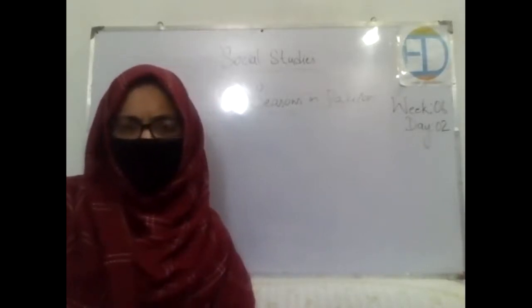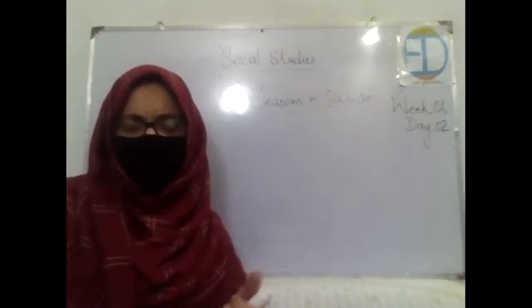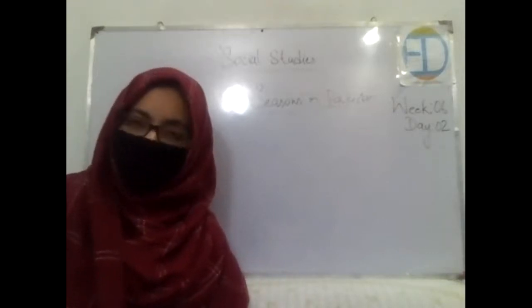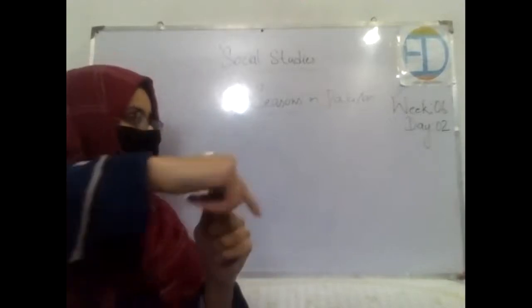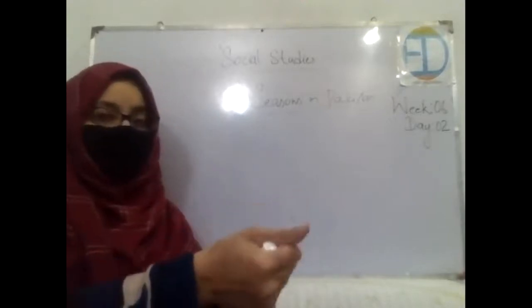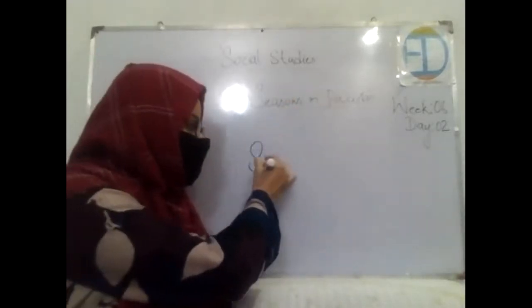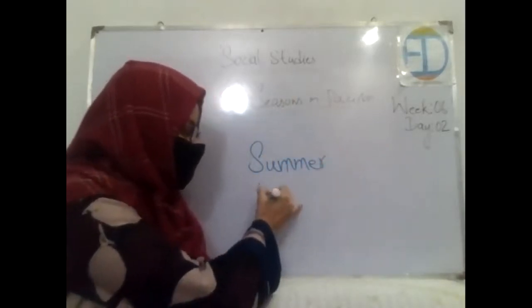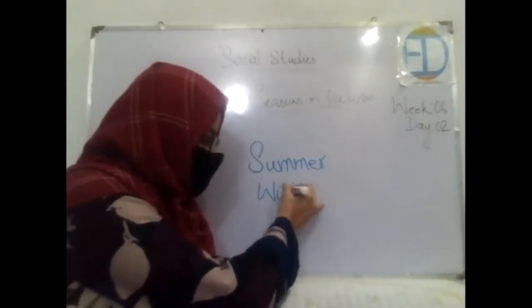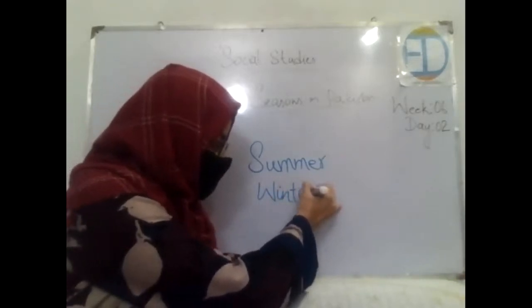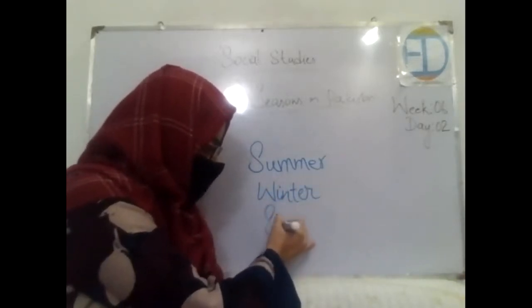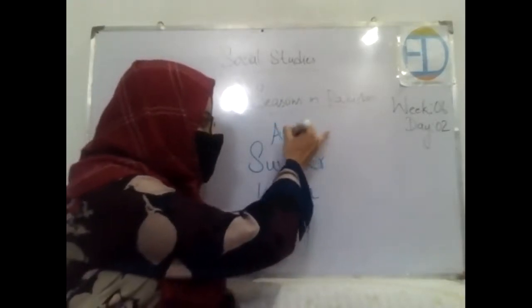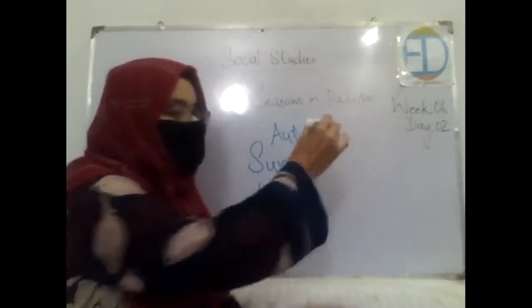How many seasons do we have? Is it six? No. Then how many? Four. And what are their names? Summer, winter, spring, and autumn.